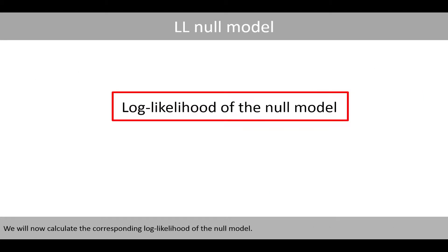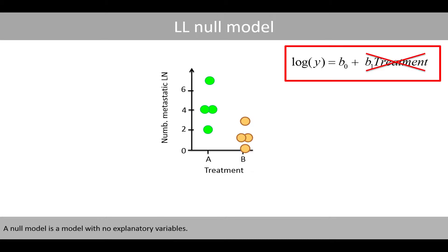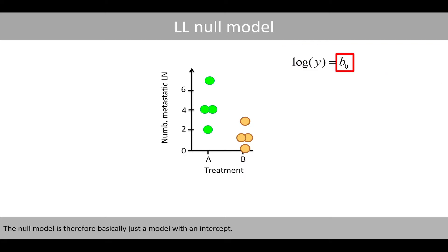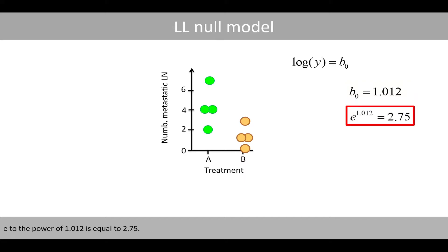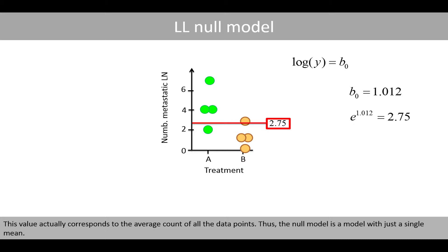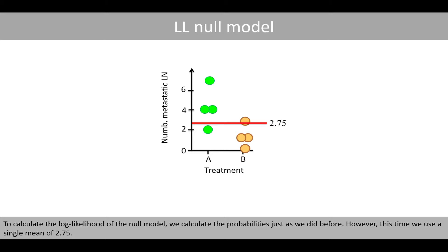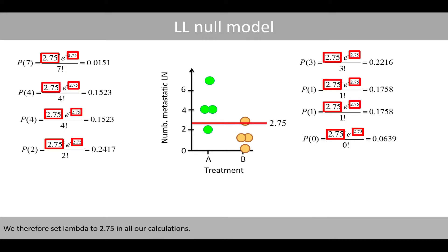We will now calculate the corresponding log likelihood of the null model. A null model is a model with no explanatory variables — it is basically just a model with an intercept. If we fit the null model to the data, B0 will be estimated to about 1.012. E to the power of 1.012 is equal to 2.75, which actually corresponds to the average count of all the data points. Thus, the null model is the model with just a single mean. To calculate the log likelihood of the null model, we calculate the probabilities as before, but this time using a single mean of 2.75, setting lambda to 2.75 in all calculations.